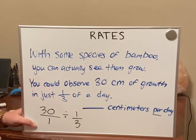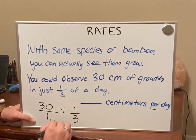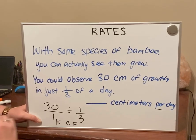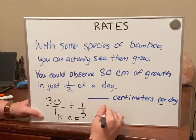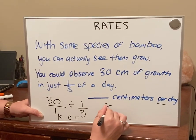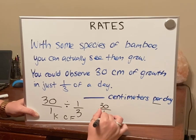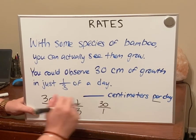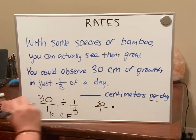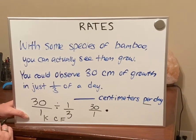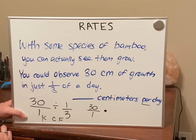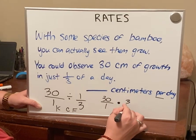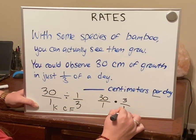Just like the other problem we're going to keep, change, flip. I'm going to keep 30 over 1, change my division to multiplication, and flip my one-third. When I flip one-third that becomes 3 over 1.